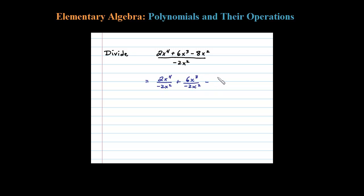...minus 8x squared divided by negative 2x squared. I'm going to divide all the terms by that monomial. In this particular case, there's going to be a lot of cancellation. So here the twos cancel, x squared cancels, leaves me with an x squared in the numerator. Let's be careful—there's a negative there.